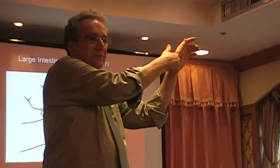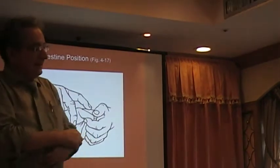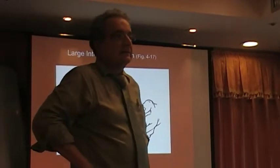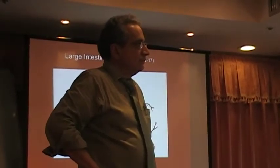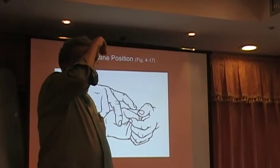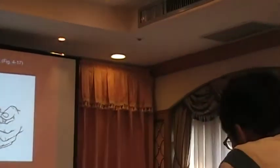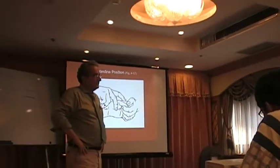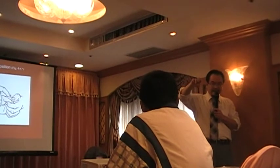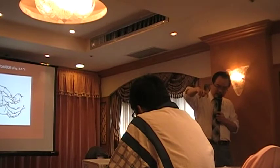For the large intestine pulse position, after feeling the kidney pulse, there are two methods: you can use the ring finger angled forward 45 degrees to find the large intestine position, or the second method is to press the finger downward first, then angle it 45 degrees.